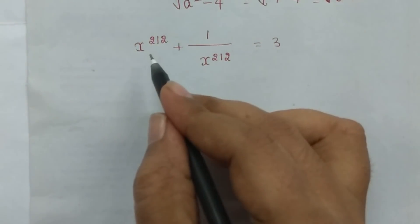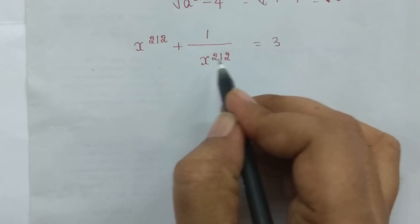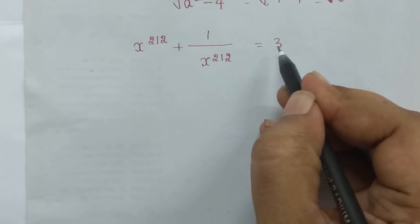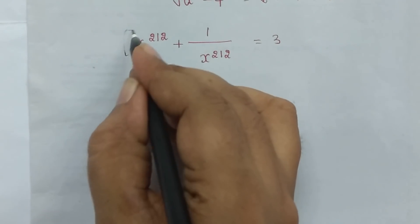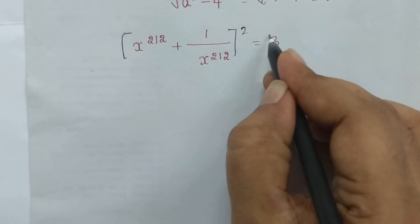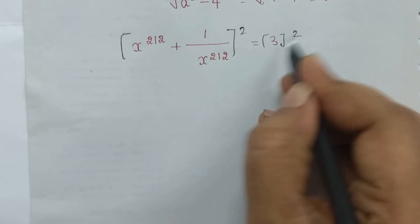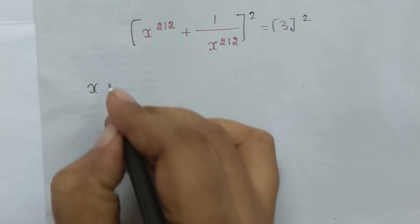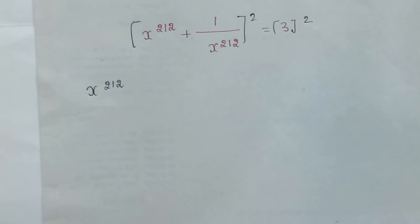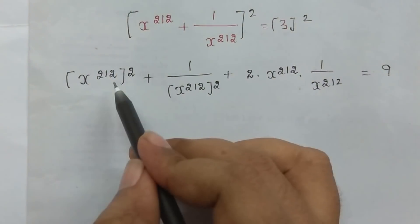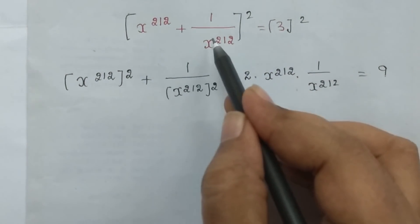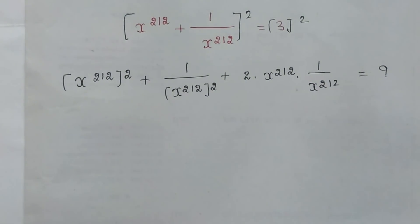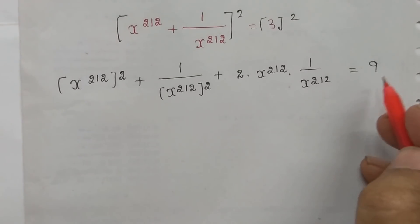The value is x^(1/2) + 1/x^(1/2) is equal to 3. So this is a square — we work on both sides squaring. We apply the a plus b all square formula. So a² plus b² plus 2ab is equal to 9.